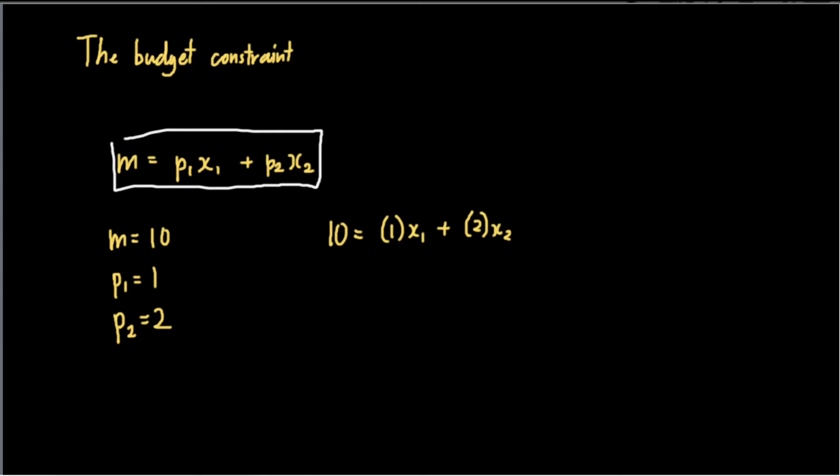Immediately we find this function to be linear, meaning we only have to find two points on the budget line and draw a straight line from one point to the other to find the budget line. So the easiest way to do this is to find the maximum quantity of good one that the consumer can buy if he does not consume any quantities of good two.